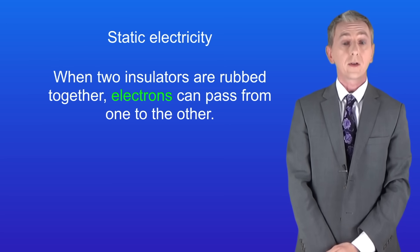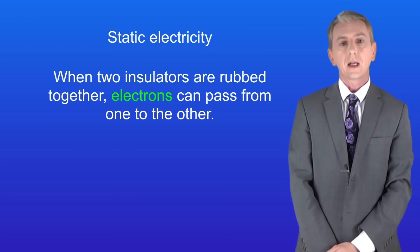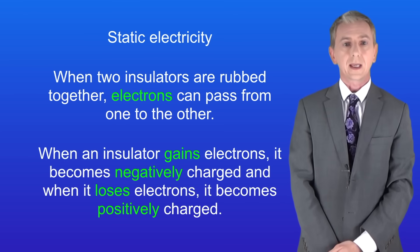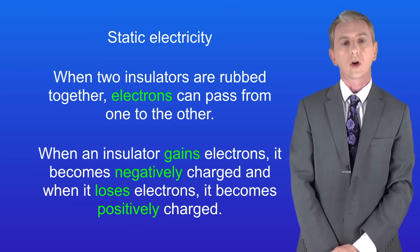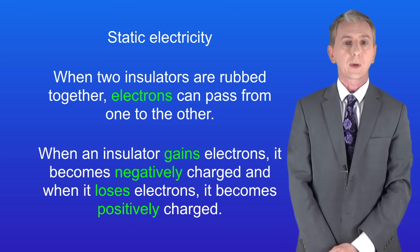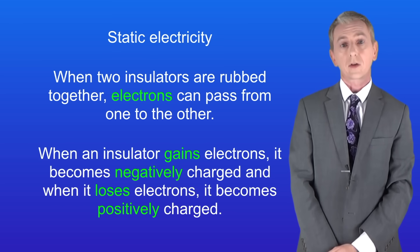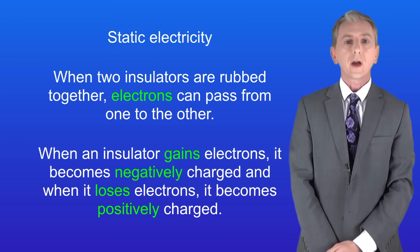In the last video we saw that when two insulators are rubbed together, electrons can pass from one to the other. When an insulator gains electrons it becomes negatively charged and when it loses electrons it becomes positively charged. Scientists call this static electricity. In this video we're going to look at this in more detail so let's get started.